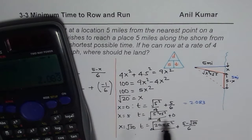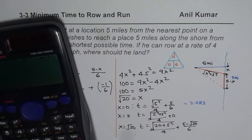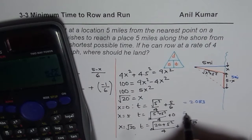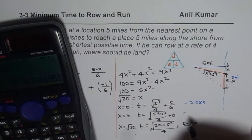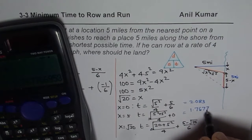When x = 5: T = √(5² + 5²)/4 + 0 = √50/4 = 5√2/4. Converting to decimals, that equals approximately 1.7677 hours.